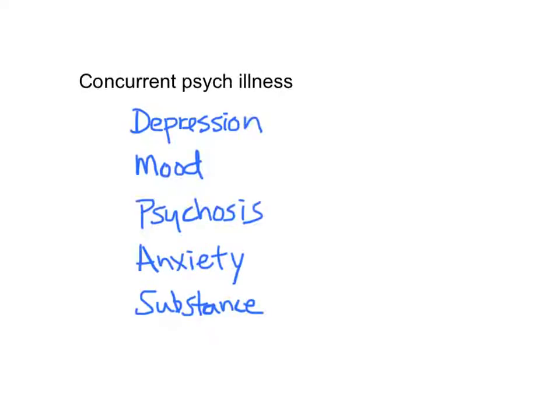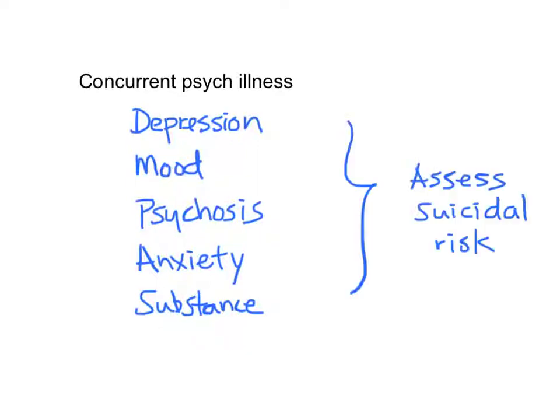For concurrent psychiatric illness, we want to ask about the conditions we just mentioned. If the patient has not made a suicidal attempt but has presented with features of these psychiatric illnesses, it is also important to assess their suicidal risk. Asking them whether they have ever thought of harming themselves will not increase the risk of suicide.